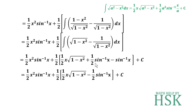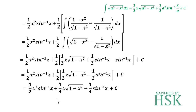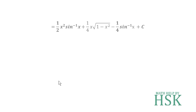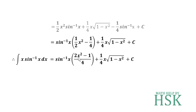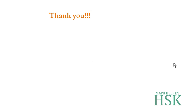Rearranging: the (1/2)·sin⁻¹(x) from the formula and the −sin⁻¹(x) combine to give −(1/2)sin⁻¹(x). Opening the bracket and multiplying by 1/2, we get (1/2)x²·sin⁻¹(x) + (1/4)x√(1−x²) − (1/4)sin⁻¹(x) + C. Taking sin⁻¹(x) common from the first and third terms gives the final answer: sin⁻¹(x)·(2x²−1)/4 + (1/4)x√(1−x²) + C.